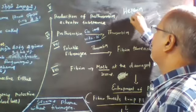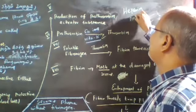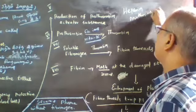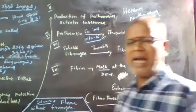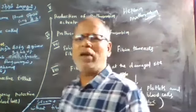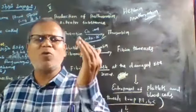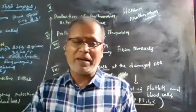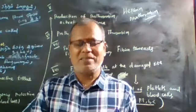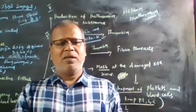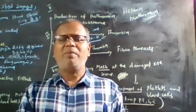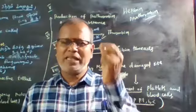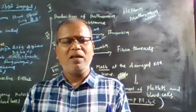Examples of anticoagulants are heparin and antithrombin. These are anticoagulants that prevent blood from clotting. Heparin is secreted by the mast cells present in the inner walls of the blood vessels.